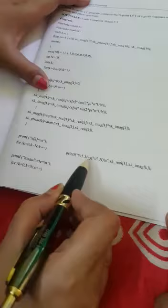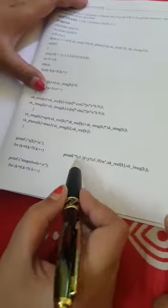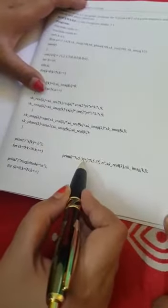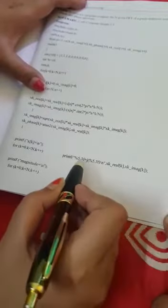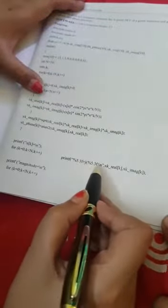So how are you going to concatenate? What is the meaning of this 5.3 f? So whatever values you are getting, the DFT values, whatever you are getting it may be a floating point value. So if you write 5.3 f that means you will have 5 digits including decimal, so after decimal there will be 3 digits. You can use any format, you can use 4.2, 4.3. 4.2 means 4 digits including the decimal, after decimal there will be 2 digits. So 5.3 f means there are 5 digits including decimal, after decimal there are 3 digits.